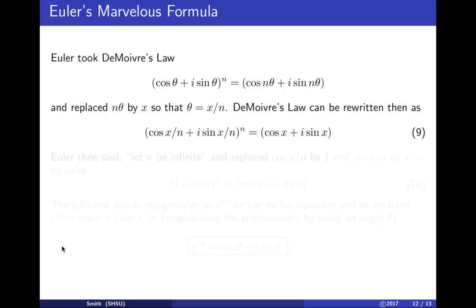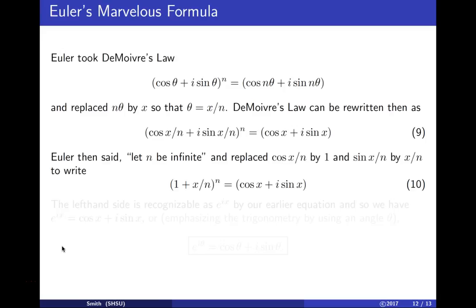As n → ∞, on the left side Euler replaced cos(x/n) by 1 and sin(x/n) by x/n, giving (1 + ix/n)^n. As n → ∞, this equals e^(ix). Thus e^(ix) = cos(x) + i·sin(x), Euler's identity.